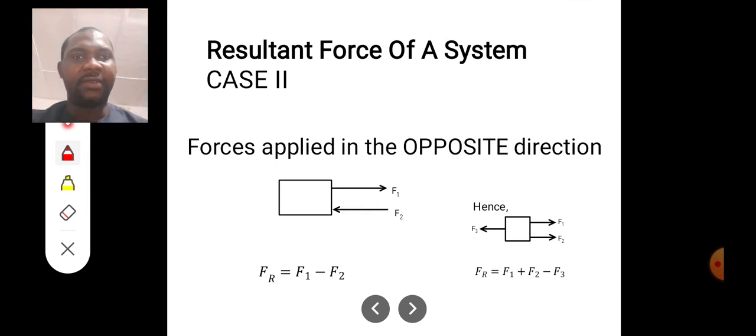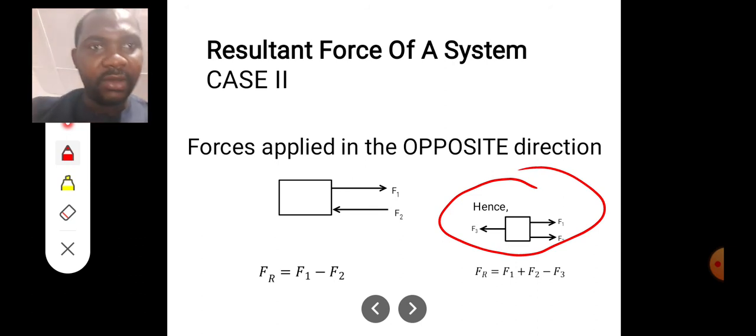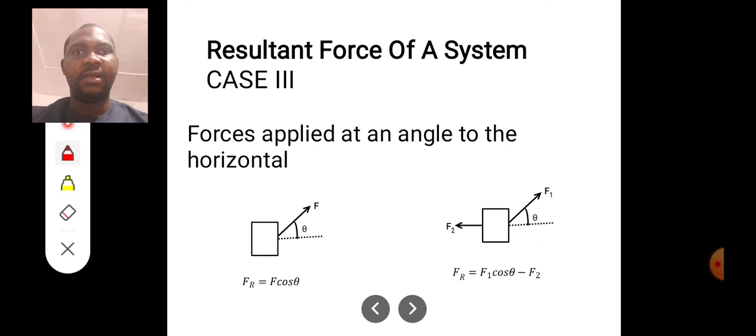If I have a system of three forces like this, you can see both F1 and F2 are moving in the same direction. So the resultant force will be F1 plus F2, then minus F3, which is moving in opposite direction.